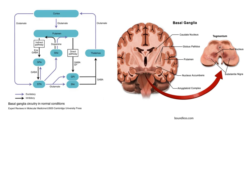We're going to look at the circuit on the left-hand side in more detail soon, but let's first remind ourselves of the important brain structures in the basal ganglia. Looking at the images on the right-hand side: here is a coronal section through the brain, and here's a transverse section through the midbrain specifically — you can see the cerebral aqueduct. The first structure I want to point out is this triangular-shaped region called the lentiform nucleus.